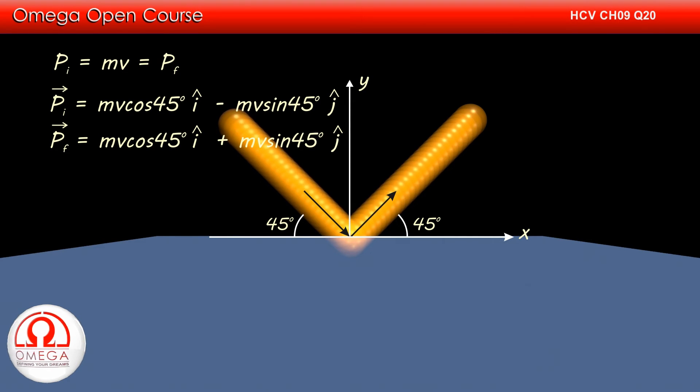After the collision, the magnitude and the angle the momentum makes with the horizontal remains same. Only the vertical component of the momentum changes. Therefore, the final momentum vector of the ball can be written as MV cos 45 degrees i cap plus MV sin 45 degrees j cap.